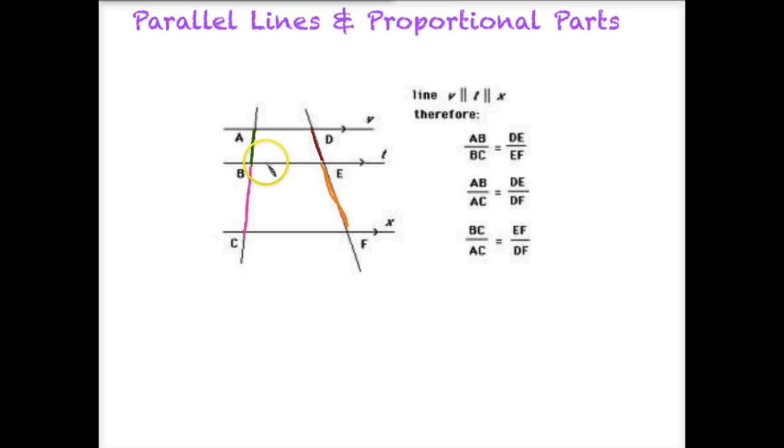We also could say that AB, so this piece over AC, which is the whole piece, is equal to DE, which is this little part, over DF, which again is the whole part. And finally we can say that BC, so now we're looking at the bottom, at this small piece, BC in pink, over AC, which is the total, over EF, this small piece here in orange, over DF, which is the total. So again, we can create proportional ratios to set pieces equal to each other, as long as we make sure that we set the same small piece compared to the same small piece, or the same total piece compared to the same total piece.